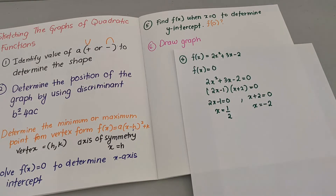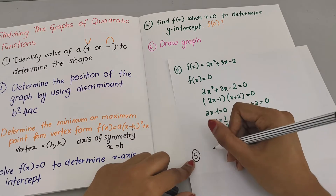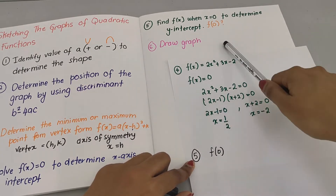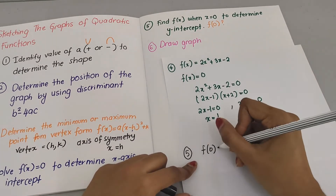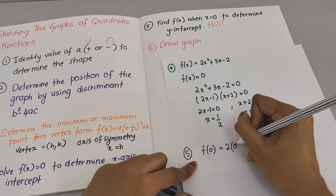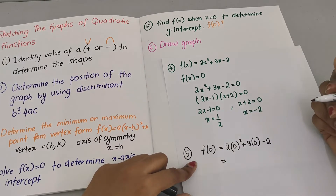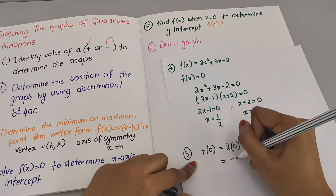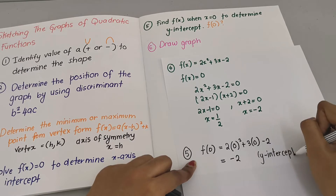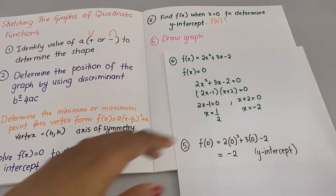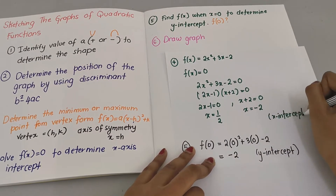Step 5: find f(0) to determine the y-intercept. We substitute x = 0 into f(x) = 2x² + 3x − 2, giving f(0) = 0 + 0 − 2 = −2. So our y-intercept is −2. We now have all the information we need.